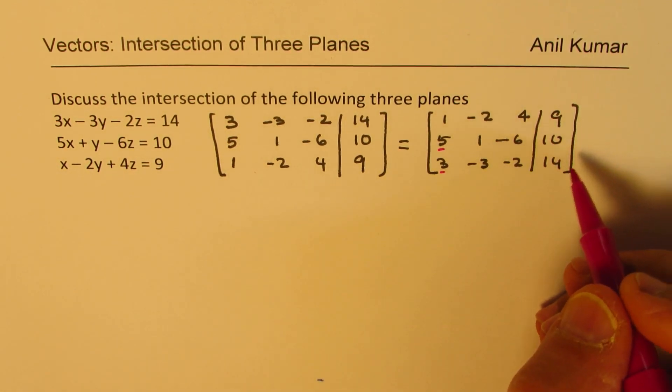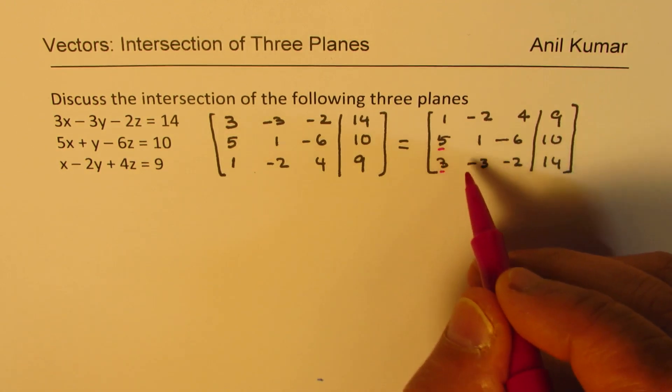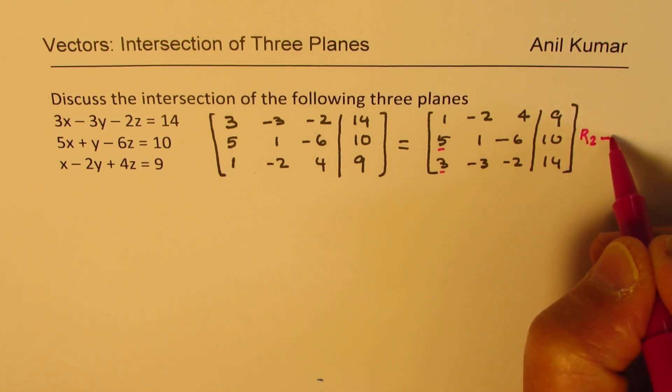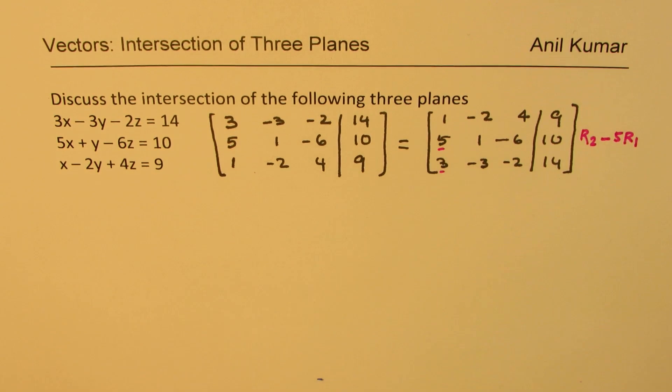Now the idea is to change 5 to 0 and also 3 to 0 by row operations. How can we do it? Well, from the second row, if I take away 5 times row number 1, I can make this 0.